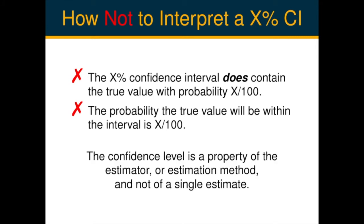In my opinion, this underlying theory about the properties of confidence intervals is the source of most people's confusion about how they should be interpreting them. The confidence level is just a property of the estimation method being used to calculate a particular type of interval estimate. For any single application of the method, it doesn't make sense to talk about the probability of the interval including the true value anymore — it either does or it doesn't. This is similar to interpreting a point estimate: we may use an unbiased estimation method, but the actual value we calculate is either larger or smaller than the true value, and we have no way of knowing which. We don't expect to get the exact right value every single time.